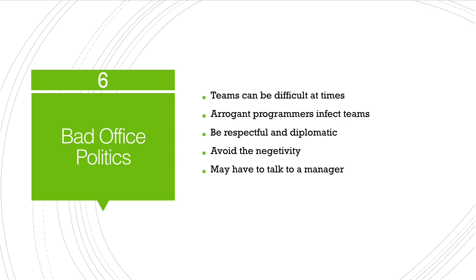Number six is bad office politics. When you work on a team at a company, you work with other people and sometimes conflict can arise — disagreements, arguments, and so on. There are a lot of developers that are really arrogant and always want to be right. Even if they know they made a mistake and they're wrong, some would never admit it. I'm not saying that's most developers, but I think we've all met at least one of these guys.